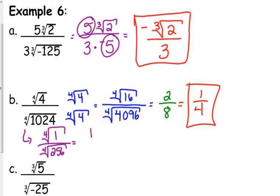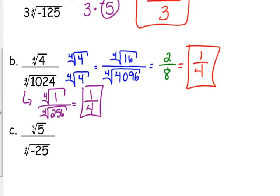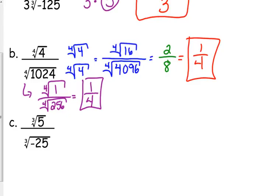So the alternate way, which is just as valid, is simplify first. 4 over 1024 is 1 over 256. The 4th root of 1 is 1. The 4th root of 256 is 4. Now, this is kind of a, I don't want to say it's a special case, but because those numbers end up being perfect 4ths, it doesn't always quite work out that way. For example, this next one.